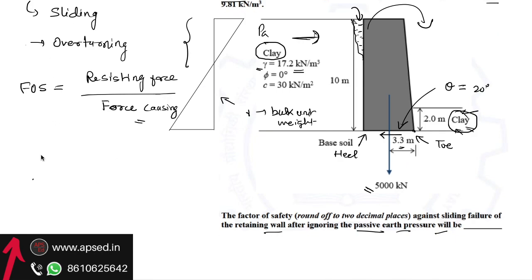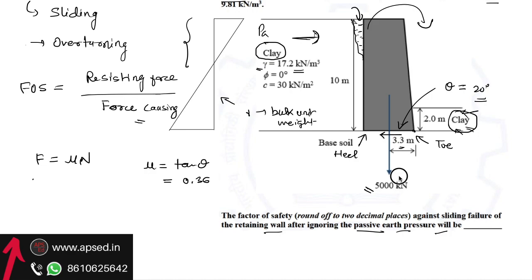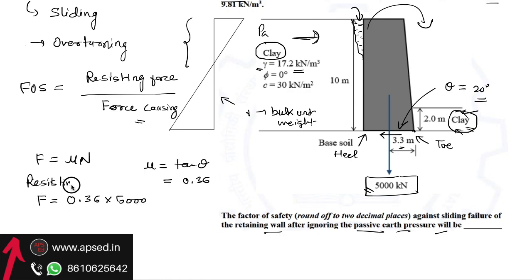The resisting force (friction force) is calculated as μ × N, where μ is the coefficient of friction equal to tan(θ) and θ is 20 degrees. So tan(20°) = 0.36. The normal force N is the weight of the retaining wall, which is 5000 kN/m. Therefore the resisting force F = 0.36 × 5000 = 1800 kN/m.